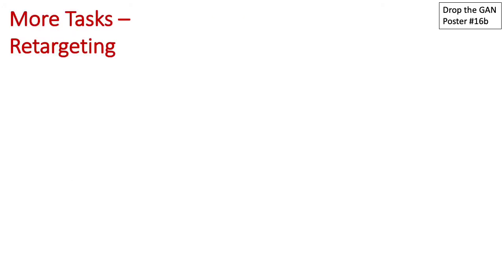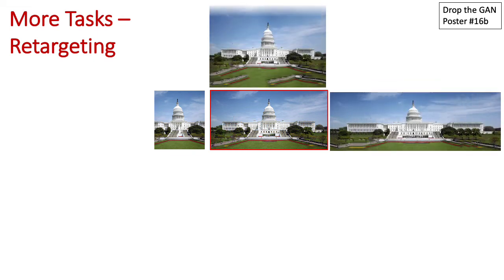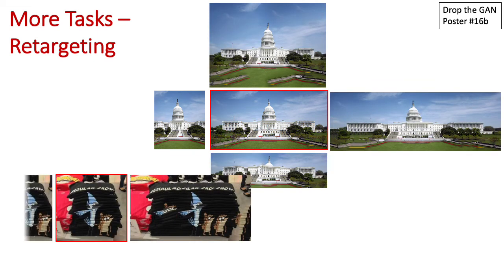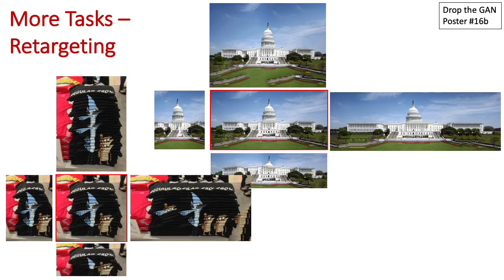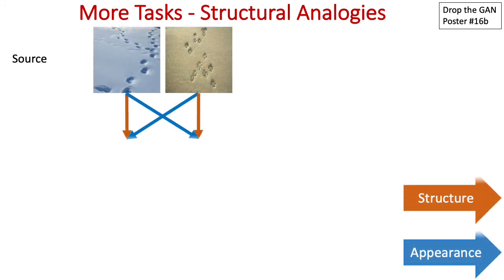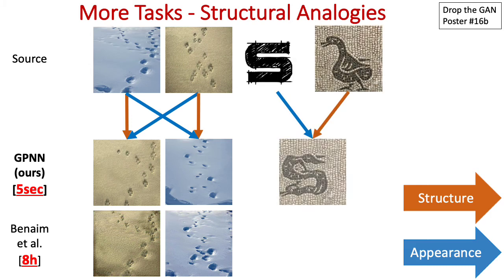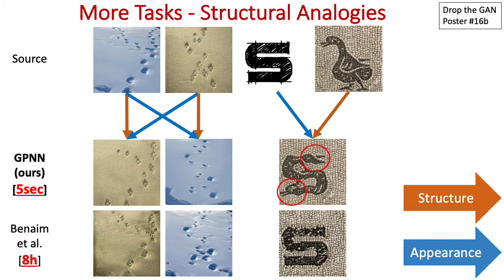GPNN supports diverse tasks in the same framework. Retargeting, for example. The output keeps all the visual information and is also sharp. Structural analogies is also supported in GPNN. The goal is to generate an image with the structure of one image and the visual appearance of the other. GPNN does this in a matter of seconds, compared with 8 hours of GAN training. GPNN's output images are also more faithful to the input.